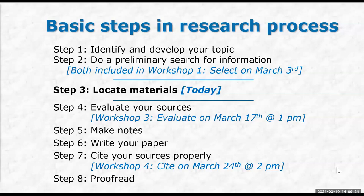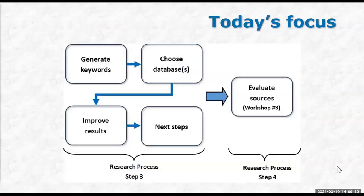And then your last step is to proofread. Today's focus is on the four blocks on the left-hand side: we're going to generate keywords, choose databases, improve your results, and talk about what the next steps are — what do you do with those results once you get them? Hopefully you will join us next week when we cover how to evaluate resources and make sure you've got the best academic sources for your paper.